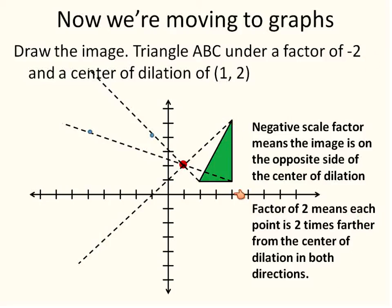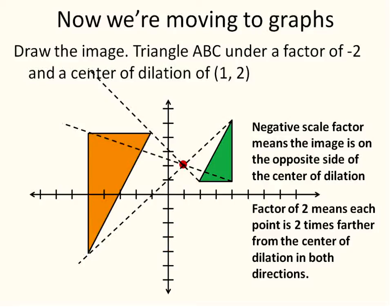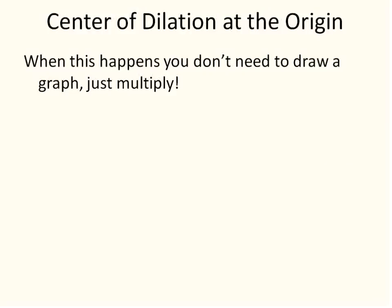Another point is 3 x-values away from the center of dilation, so its image is 6 x-values away. For the y direction, if a point is 1 unit below the center, the image goes 2 units above. And the final point is 3 places above the center, so the image goes 6 places below — 1, 2, 3, 4, 5, 6 — because we double it. Then you connect those new points to draw the triangle. So: preimage, center of dilation at (1, 2), image — with scale factor negative 2.